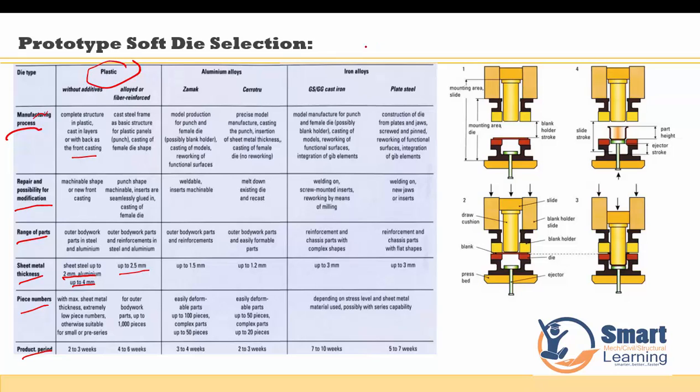These are the ranges for all the iron alloys and the aluminum alloys in different grades. Based on that, if you go for the particular soft die selection, that primarily gives you a criteria of a new method for process simulation.